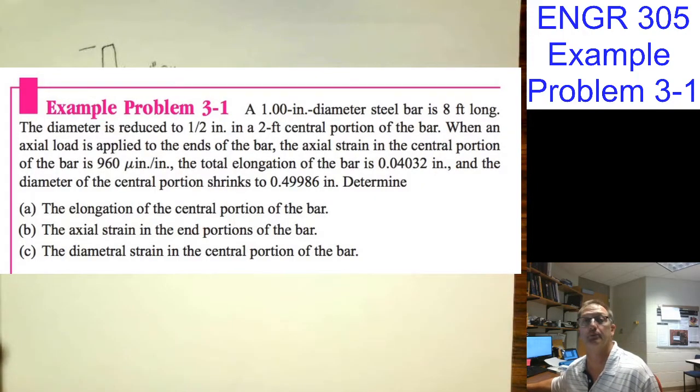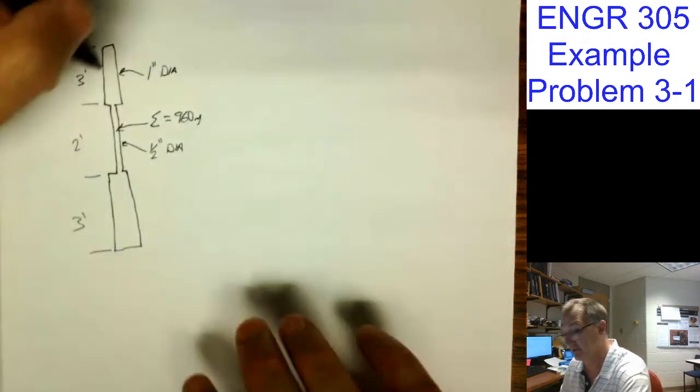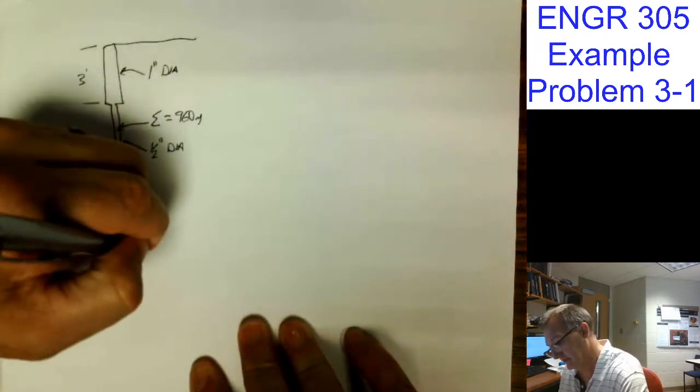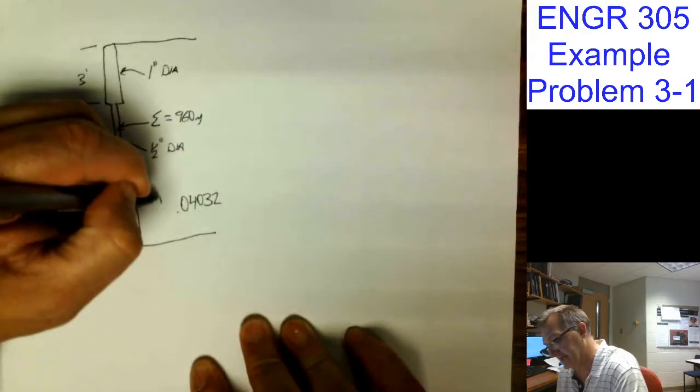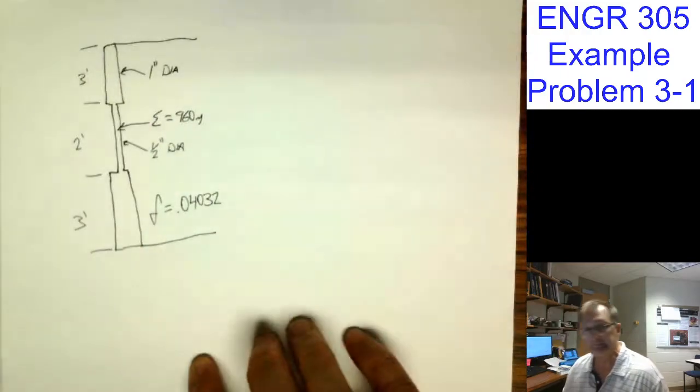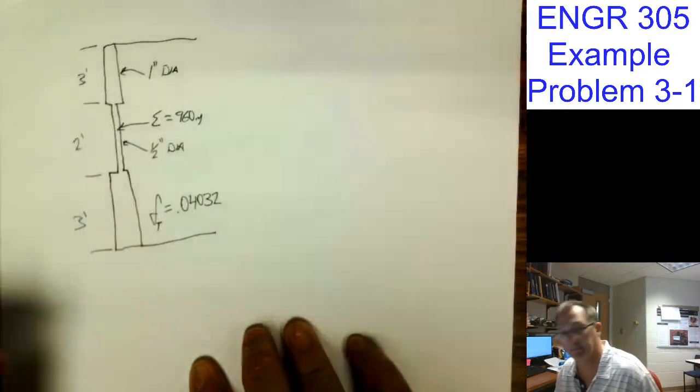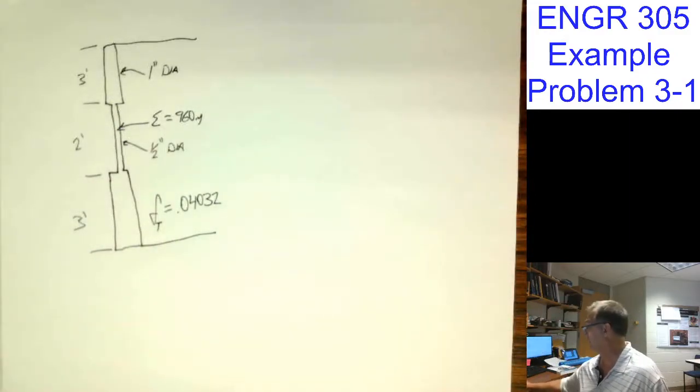The total elongation is 0.04032. So this total is 0.04032, that's my delta total. That's important. It's important that it's total, not just for the ends.